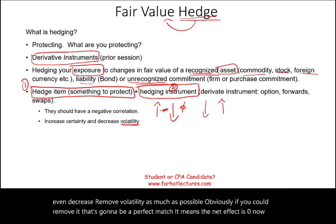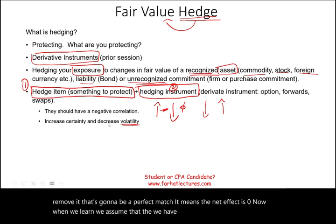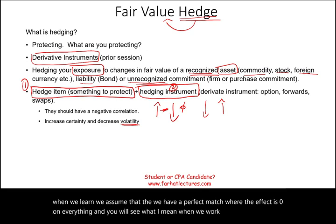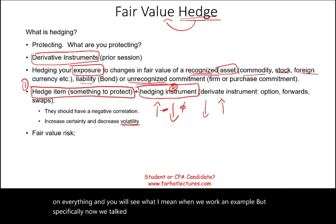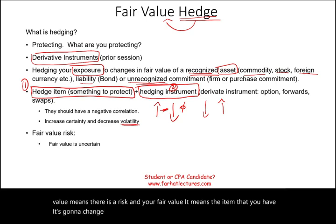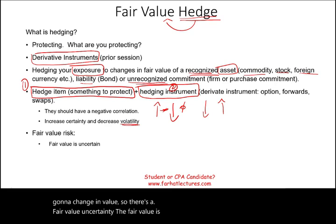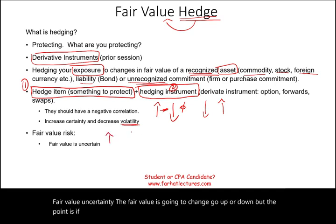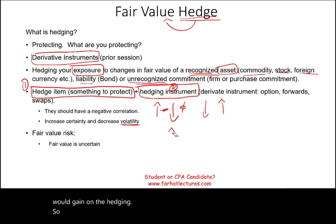When we learn, we assume a perfect hedge where the net effect is zero on everything, and you'll see what I mean when we work an example. Now specifically, fair value means there is a risk in your fair value — the item you have is going to change in value, creating fair value uncertainty. But if it went up, you would lose on the hedging; if it went down, you would gain on the hedging. So you are protected from volatility.